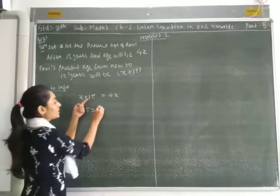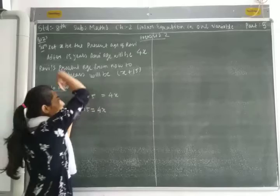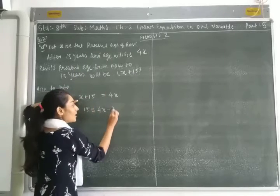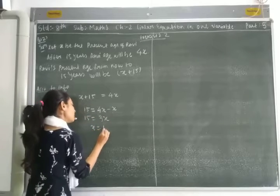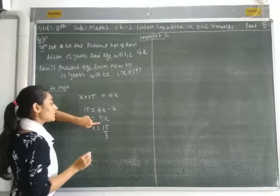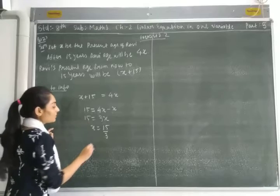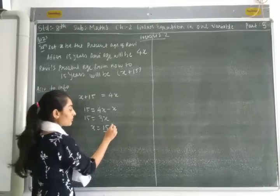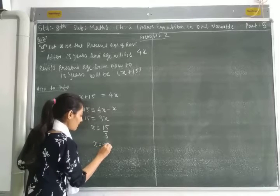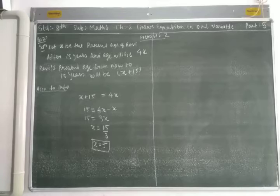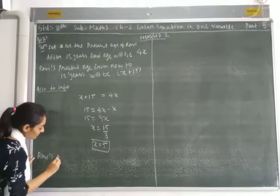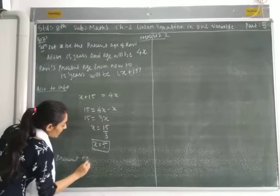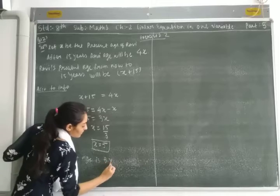Now we solve: keep 15 on the left, take x to the right. So 15 equals 4x minus x, which is 3x. Therefore x equals 15 divided by 3, which equals 5. So the current age is 5 years. x equals 5 years.